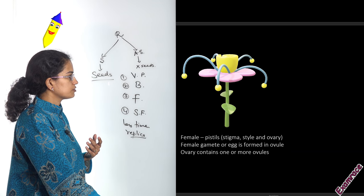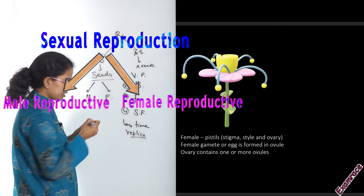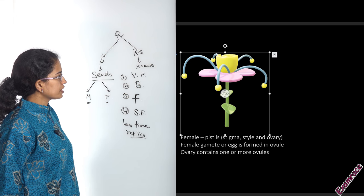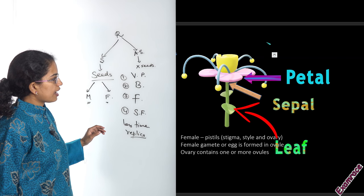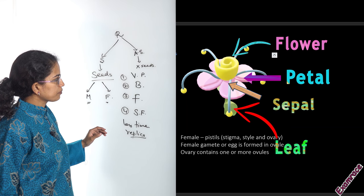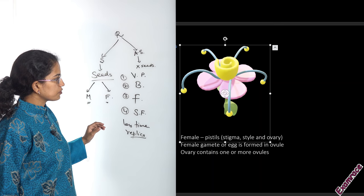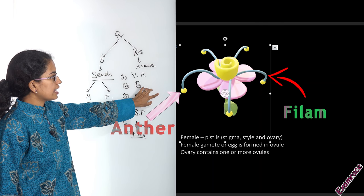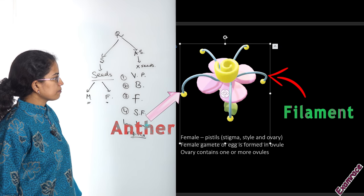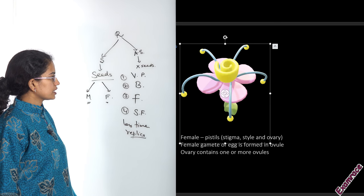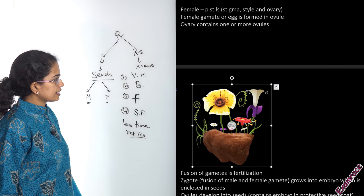Under sexual reproduction, you have two parts: the male reproductive system and the female reproductive system of the plant. Looking at a plant diagram, you can see the green leaves, the pink petals, and five anthers — the structures at the ends of lines (filaments). The blue line you can see is the filament, and towards the end you have the anther. The anther contains pollen grains, which are the male reproductive parts.